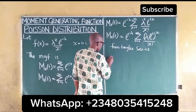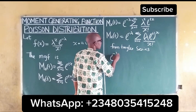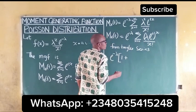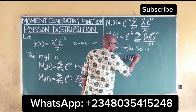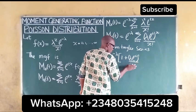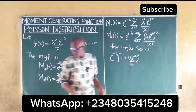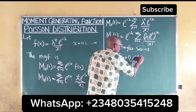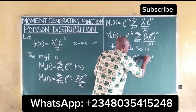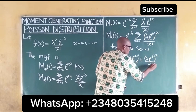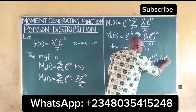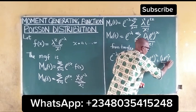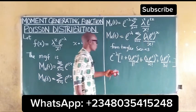From Taylor series, we have that e^(-lambda) can be multiplied to give us 1 plus (lambda * e^t) all over 1 factorial, plus (lambda * e^t) all over 2 factorial, and it continues that way.